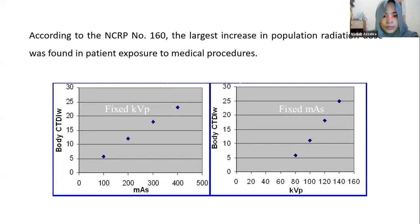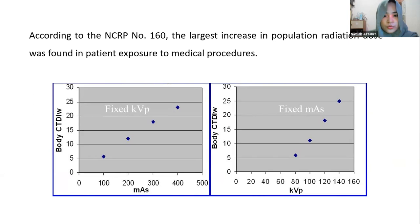As seen in the picture, when we increase the kVp or mAs, the CTDI (CT Dose Index — the unit expressing radiation dose in medical phases) will also increase. Explicit consideration of the relationship of CT image quality to applied dose is crucial in CT radiation protection. Ensuring high CT image quality with reduced radiation dose exposure is an important issue, especially for radiologists and medical physics researchers.